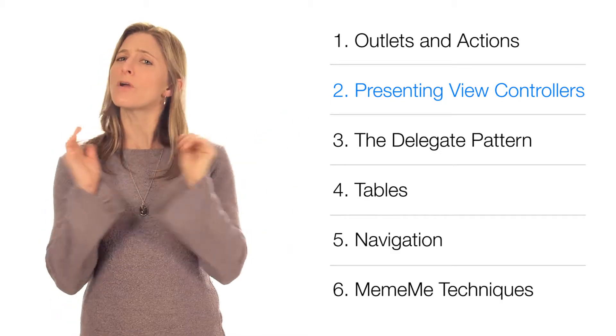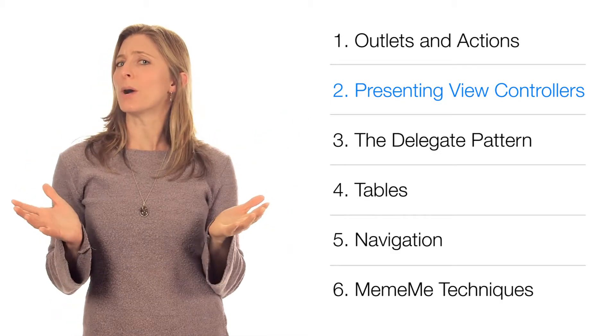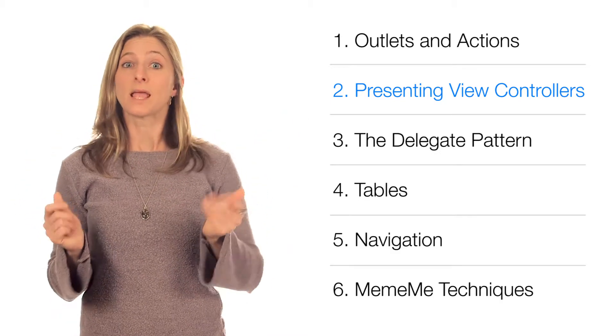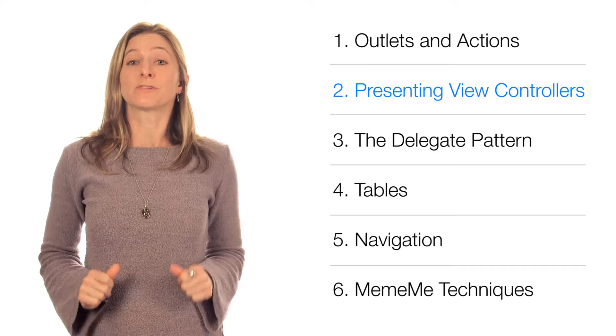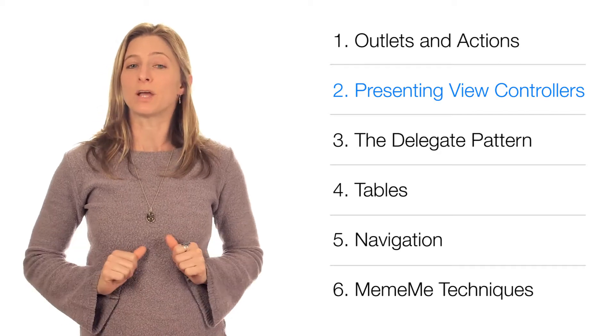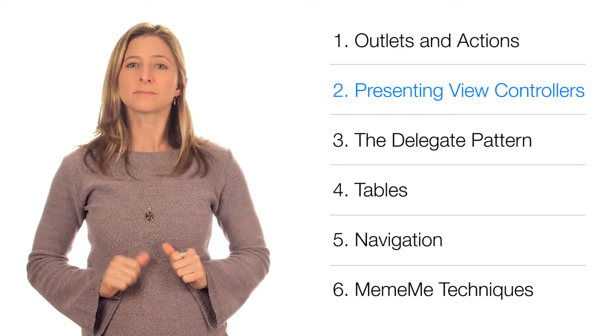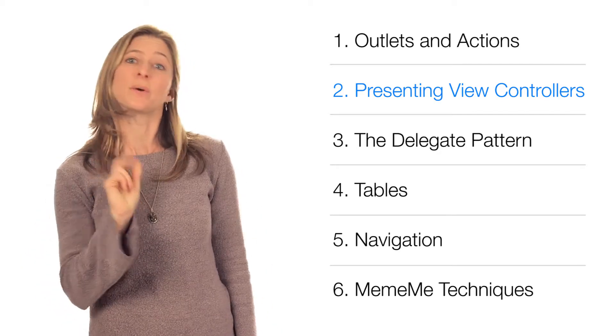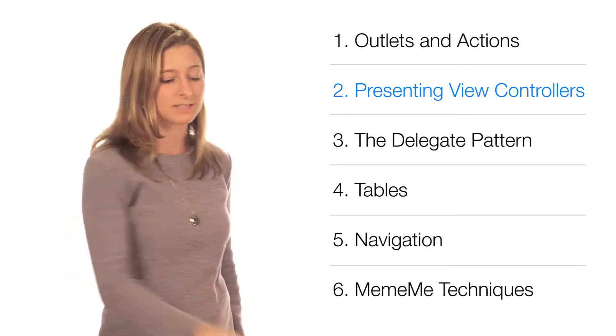What are our options in iOS for presenting a UI with multiple pages of content? How do new pages of content make their way onto the screen? We're going to talk about two stock ways that Apple provides.